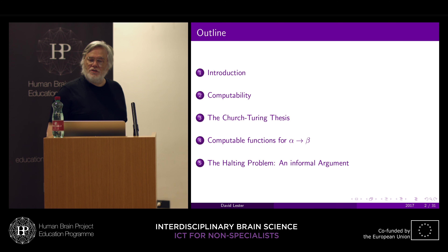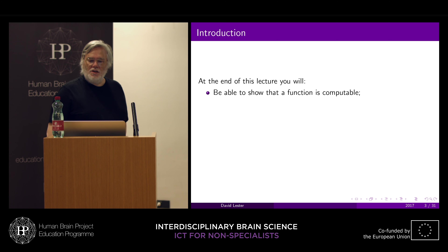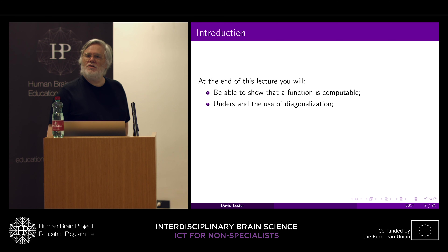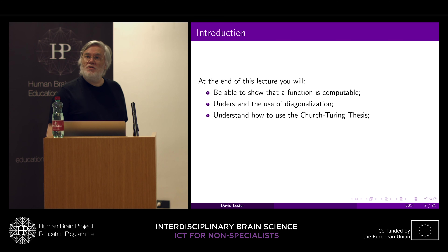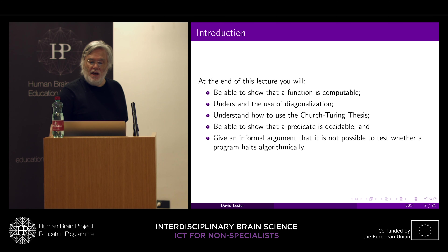I'll look at computable functions of more complex types, and finally we'll make an informal argument about why the halting problem is not soluble using a computer. At the end of this lecture, you should be able to show that a function is computable, understand the use of diagonalization — a repeat from lecture two, where we used diagonalization to show there were more real numbers than natural numbers — understand how to use the Church-Turing thesis, say when a predicate is decidable, and give an informal argument about why it's not possible to test whether a program halts by writing an algorithm.